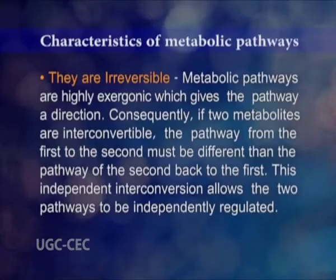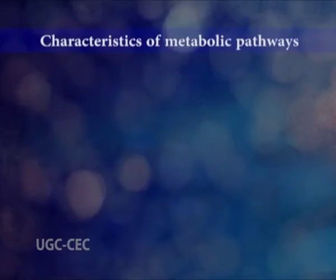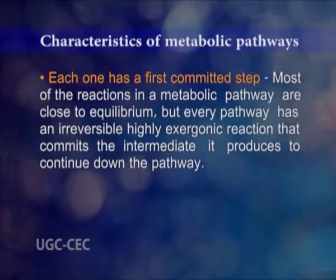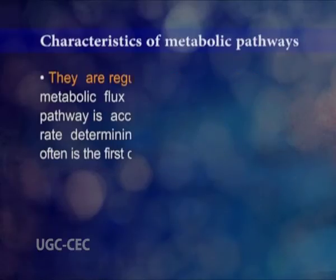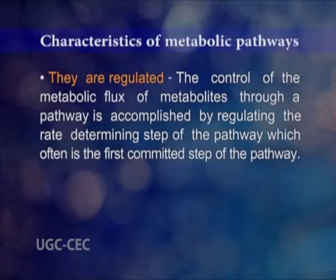This independent interconversion allows the two pathways to be independently regulated. Each one has a first committed step. Most of the reactions in a metabolic pathway are close to equilibrium, but every pathway has an irreversible, highly exergonic reaction that commits the intermediate it produces to continue down the pathway. They are regulated — that means control of the metabolic flux of metabolites through a pathway is accomplished by regulating the rate-determining step, which often is the first committed step of the pathway.